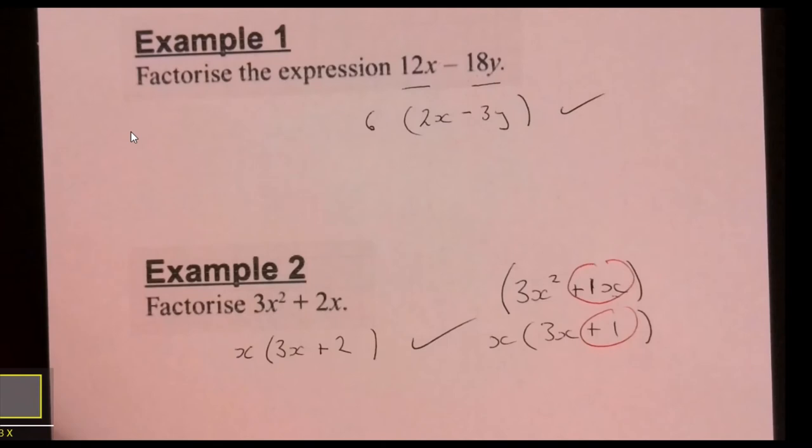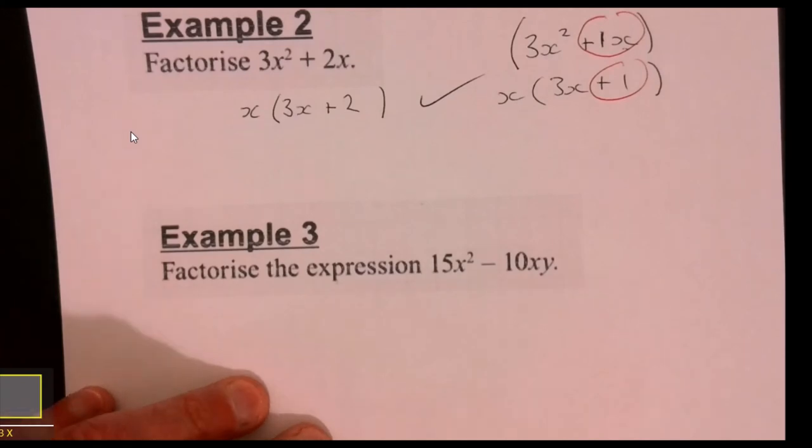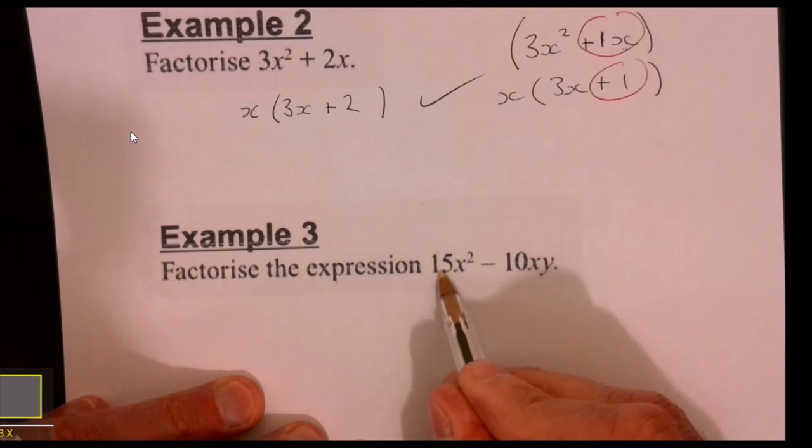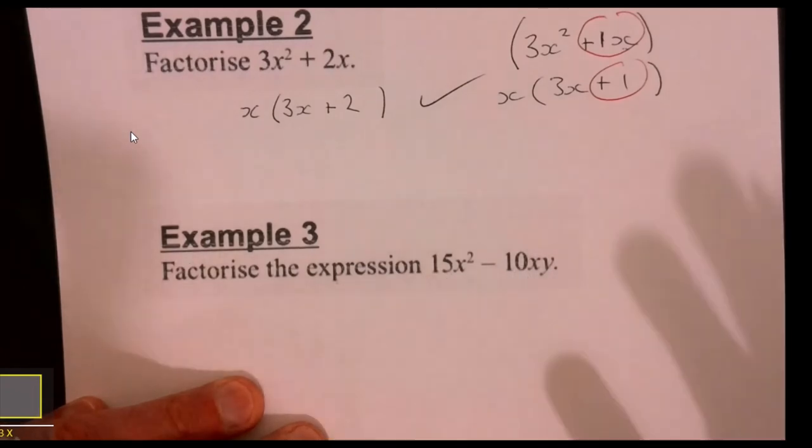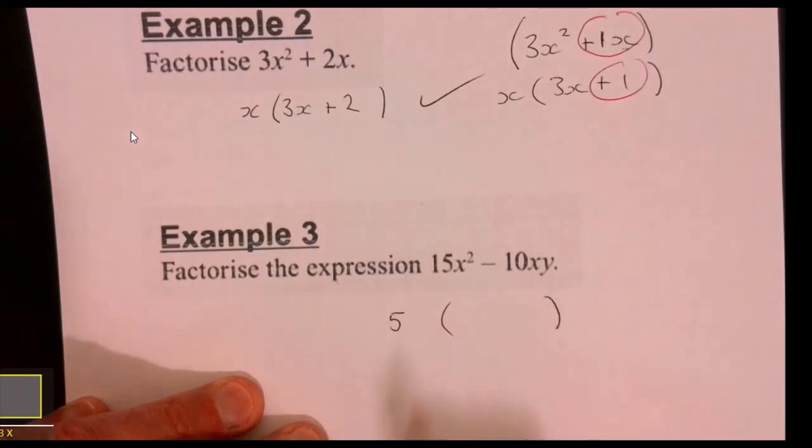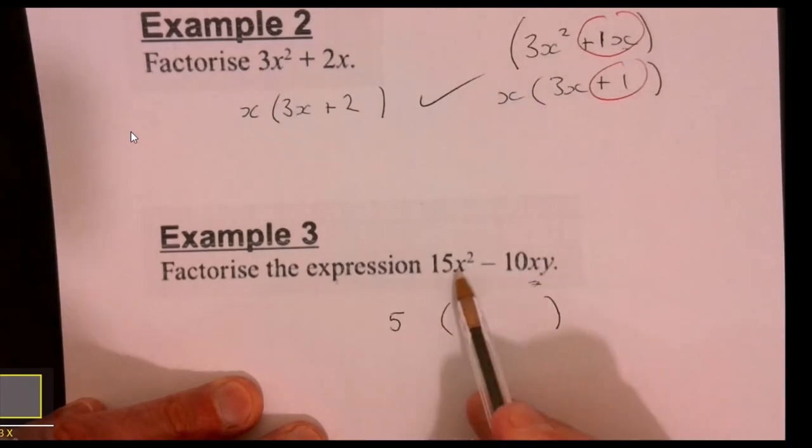The last one I'm going to do is this one just here. The only difference is that the numbers are going to work. What goes into 15 and 10? 5 does, so 5 is going to go outside. Sometimes when I'm unsure, I just write down what I know. I know I'm going to take something outside and then there's going to be a bracket. Now I'm going to look at the letters. x is in both, so numbers and letters can go outside the bracket.